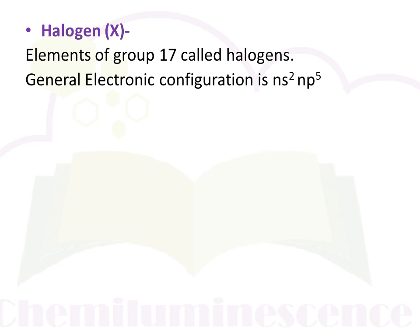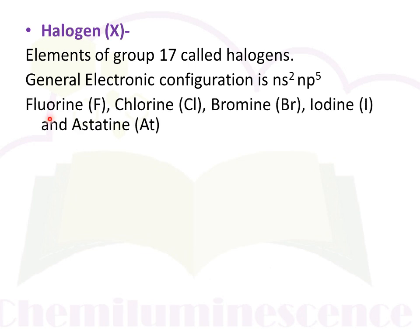Do you know which elements are present in Group 17? Fluorine, chlorine, bromine, iodine, and astatine belong to Group 17. There may be one more element — an artificially synthesized element named tennessine, having the symbol Ts.